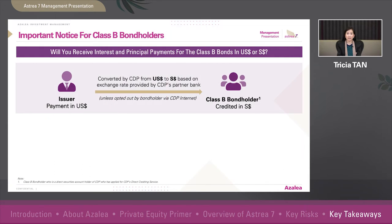As a Class B bond holder, do note that even though interest and principal payments on the US dollar denominated Class B bonds are made by the issuer in US dollars, you will receive Class B payments in Singapore dollars by default into your designated bank account, converted by CDP at such exchange rate provided by CDP's partner bank.